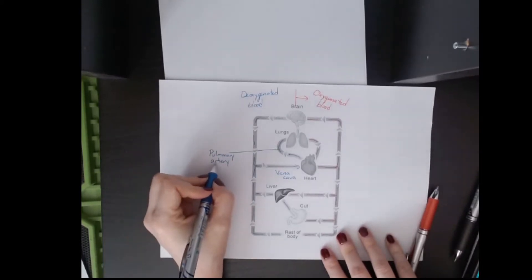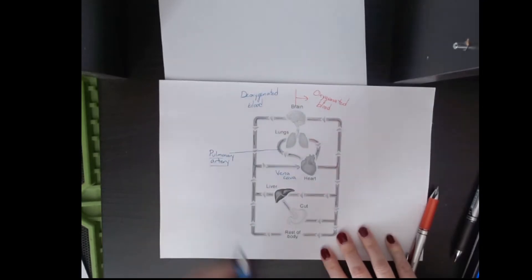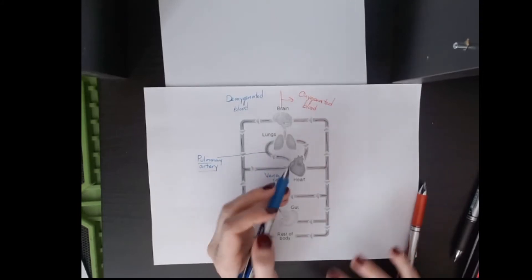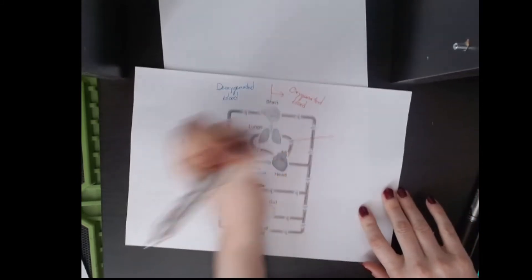And arteries usually carry oxygenated blood. This is the exception. The pulmonary artery carries deoxygenated blood. So then the blood goes to the lungs, it undergoes gas exchange, so it drops off CO2, picks up oxygen, and comes back to the heart via the pulmonary vein.